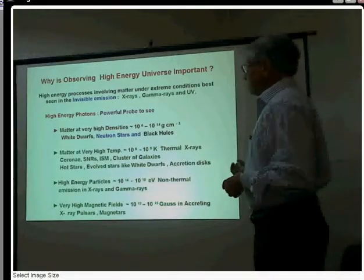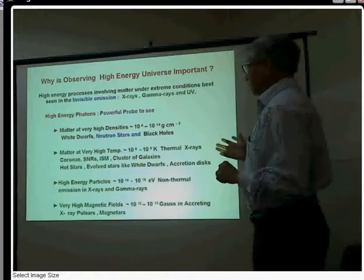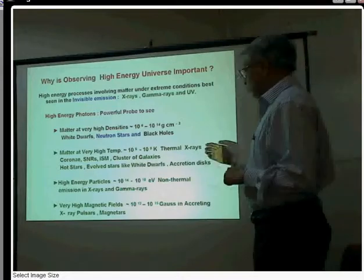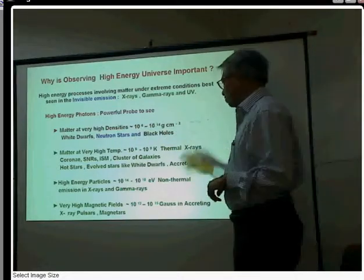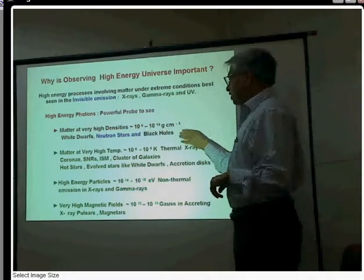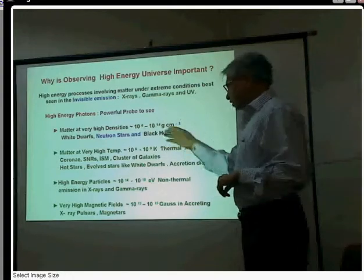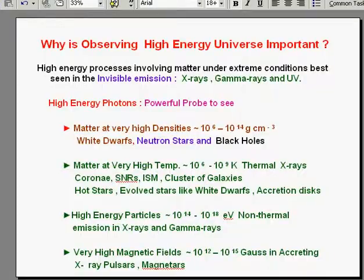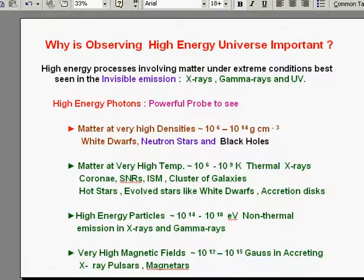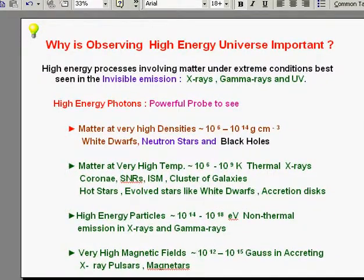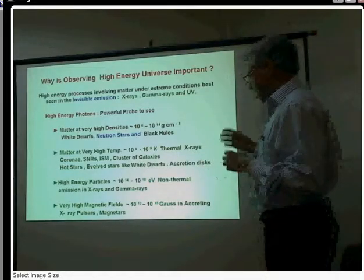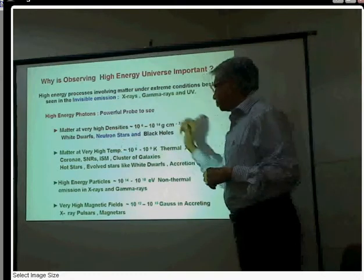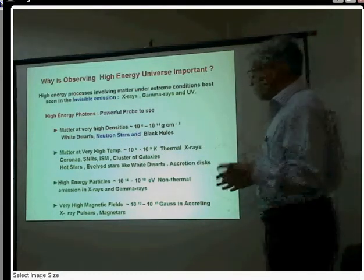The reason is that the high-energy universe — matter at very high density, typically 10^14 to 10^16 grams per cc, which you find in white dwarfs, neutron stars, and black holes — is best studied in the X-ray and gamma-ray region. X-rays and gamma rays require high-temperature gas to produce, and such gas is produced when matter from a companion star accretes into the gravitational potential of neutron stars and black holes, attaining high temperature and radiating.